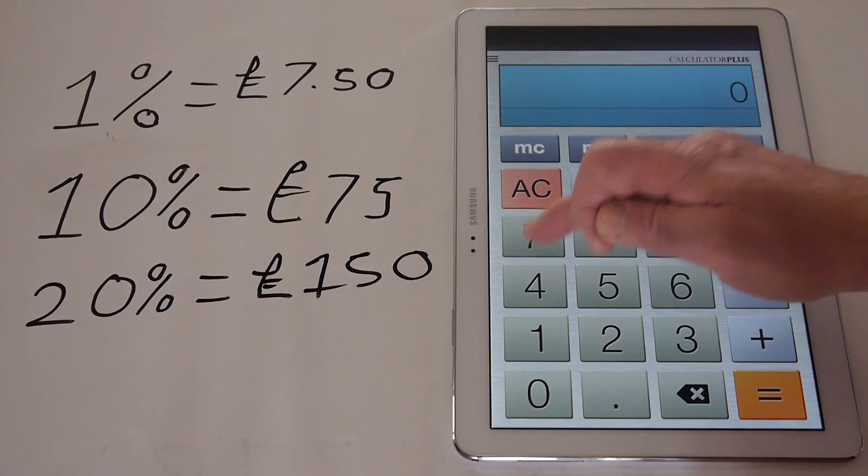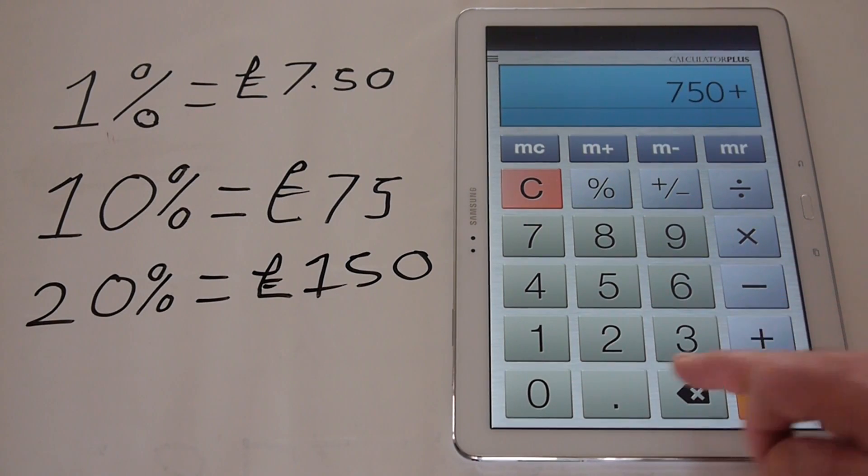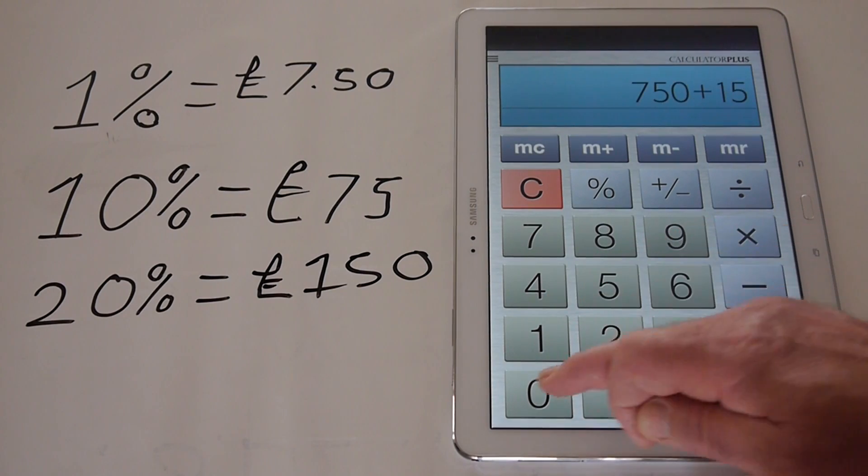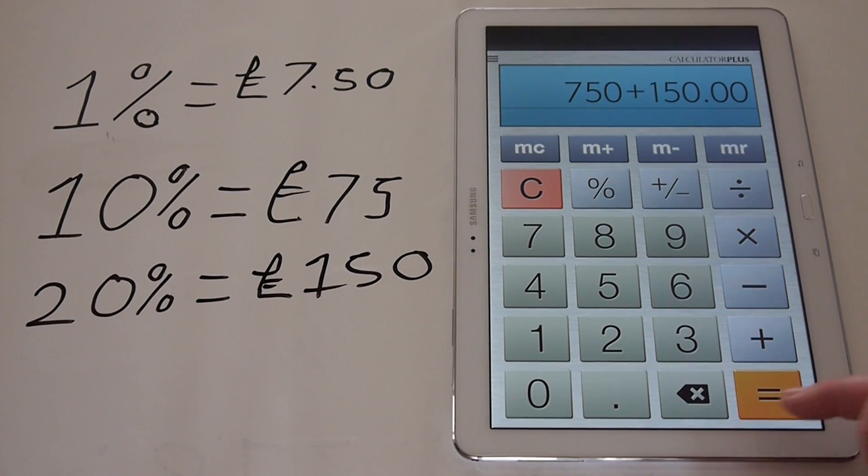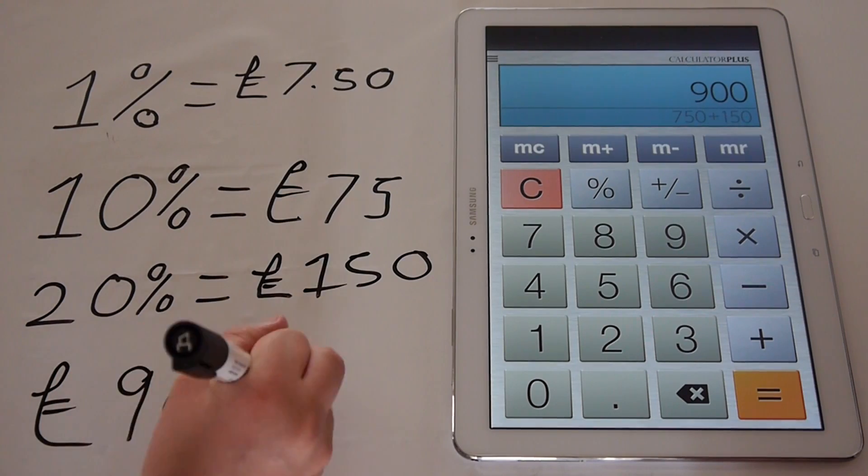OK, so we now take the £750, and we add on £150, and the answer is £900. So £750 adding on the 20% equals £900.